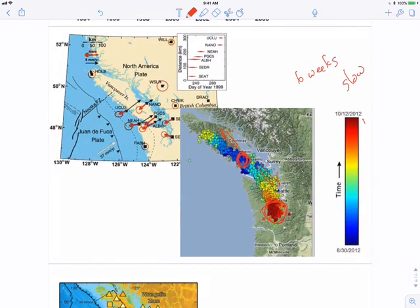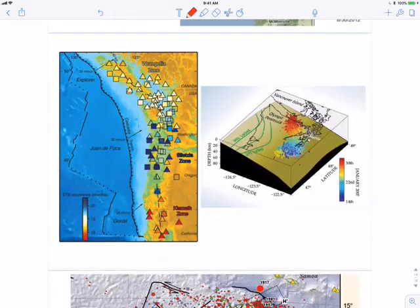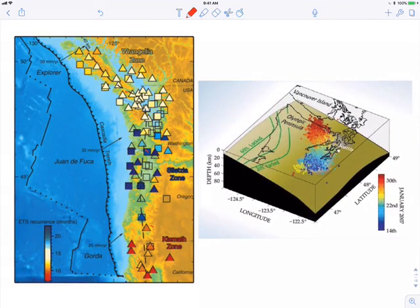This so-called episodic tremor and slip occurs throughout Cascadia, and we can see that it actually occurs in three distinct bands, a northern section, a central, and a southern.